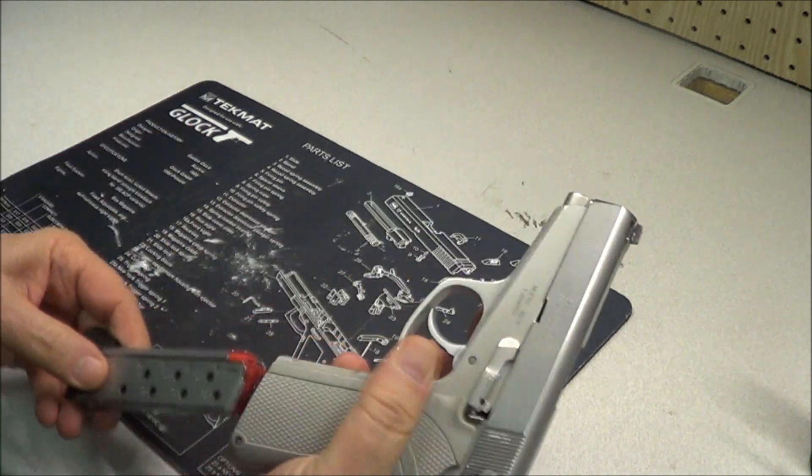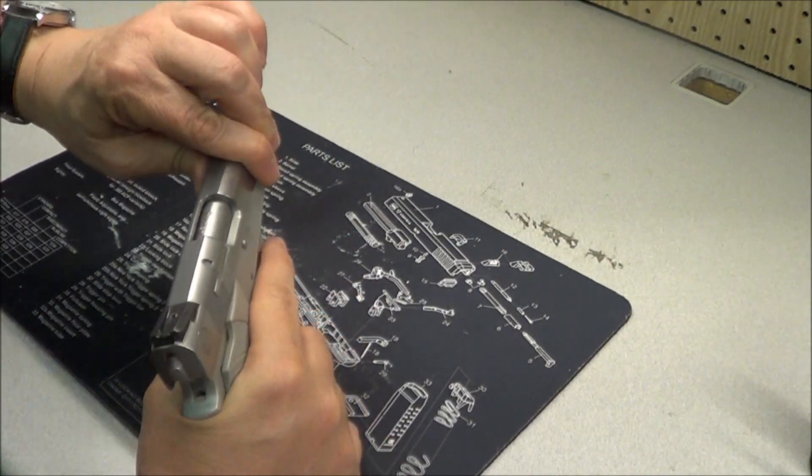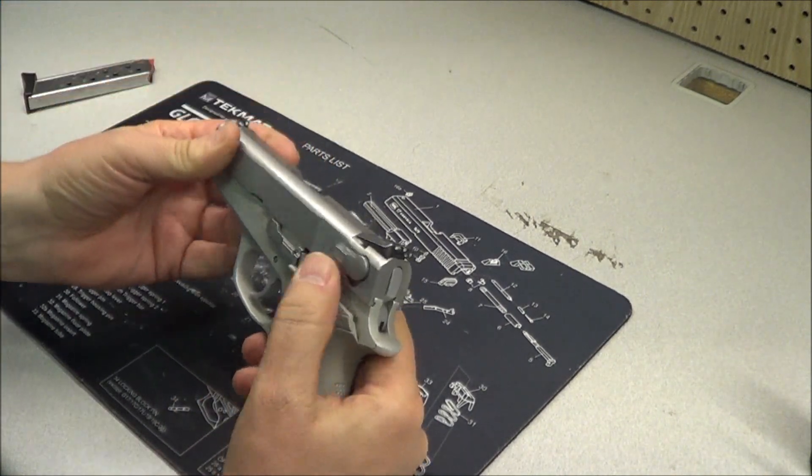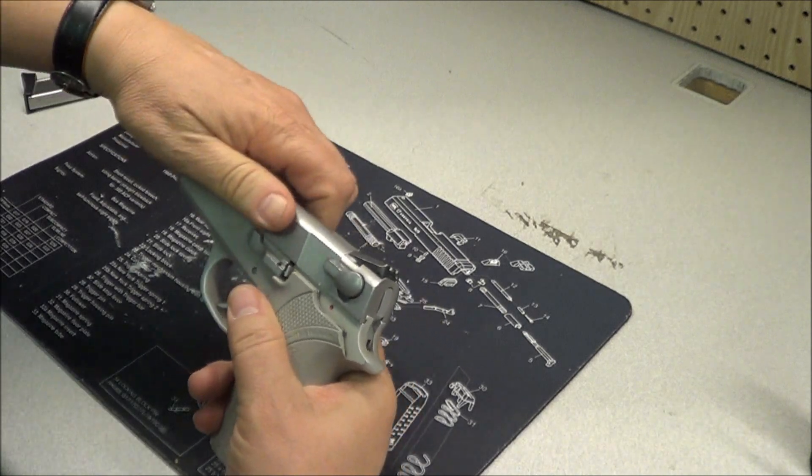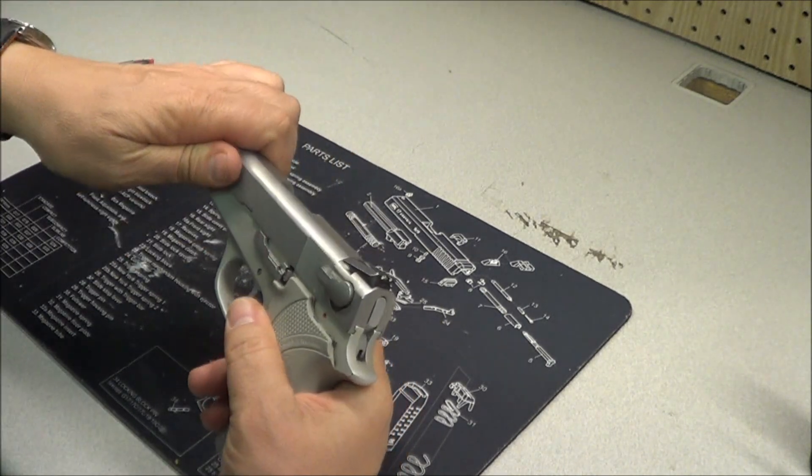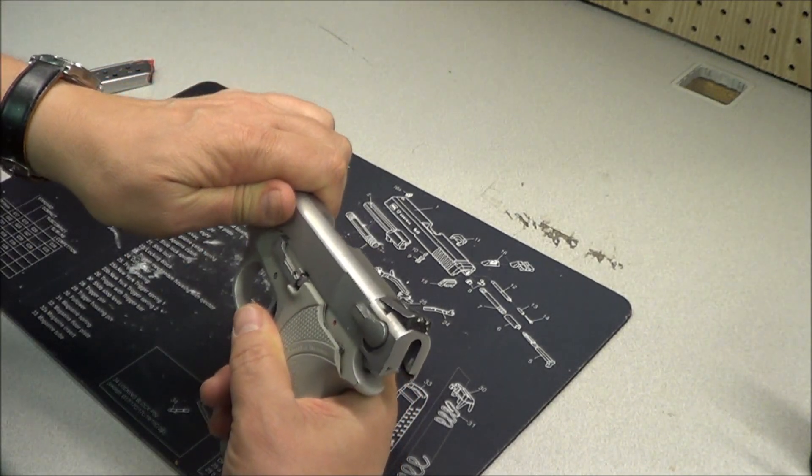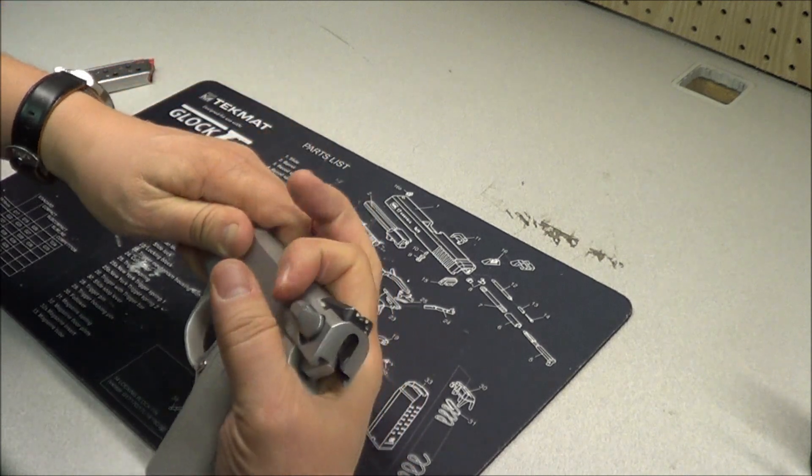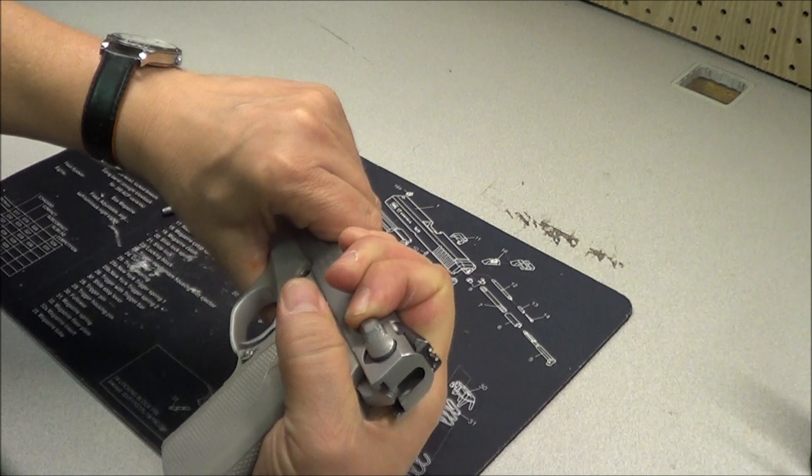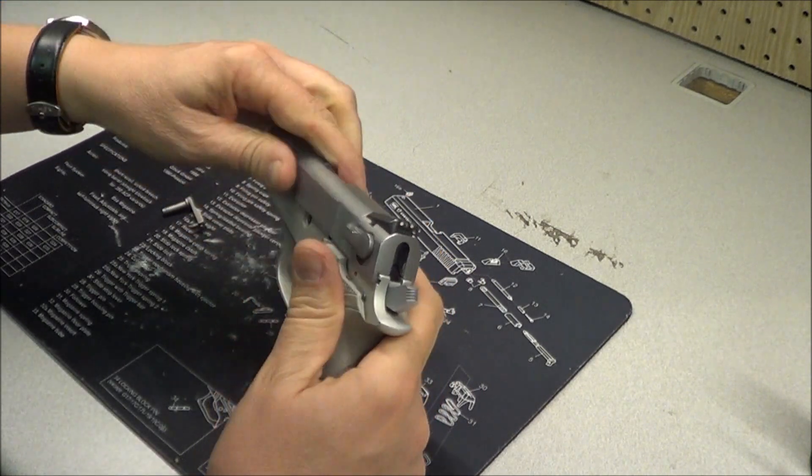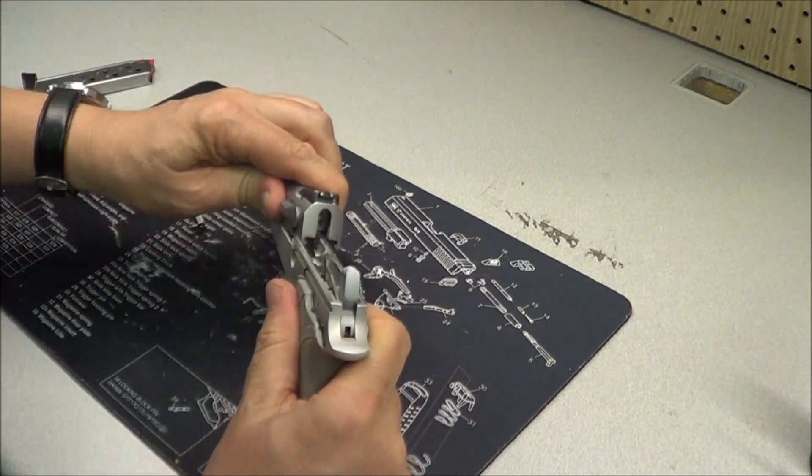But to show you how to field strip it, drop the magazine out. Make sure it's empty. It is empty. And you pull the slide back a little bit until this notch aligns with this one right here. And pop out the slide stop. When the slide stop's out, the slide comes off. Just slide it forward.